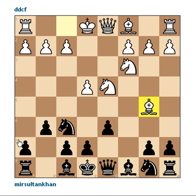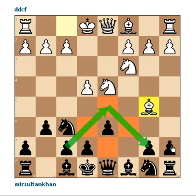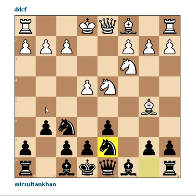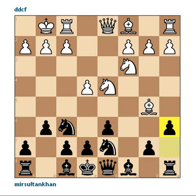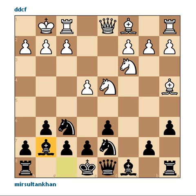He played quite an interesting move that attacks weak squares in my D5 complex, but I can defend against that easily. I played the blocking move Nd7. He castled, and I immediately challenged this Bishop which is in my territory. The Bishop went back, and I played Bg7, strengthening my E5 colour complex.